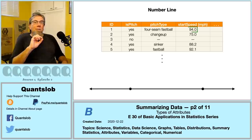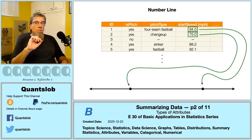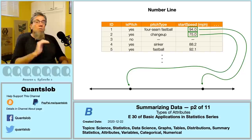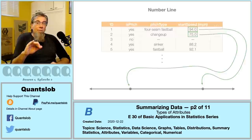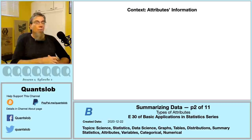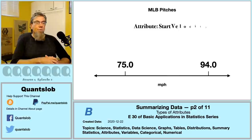For example, suppose we have a pitch whose start speed is 94 miles per hour and another whose start speed is 75 miles per hour. 94 is farther to the right on the number line than 75. Is it natural to say that the first pitch is greater than the second in terms of velocity? Clearly yes. If we can speak of our observational units in this way, our attribute is almost certainly numerical. Ideally, data is accompanied by context — for example, the units of start speed are miles per hour.